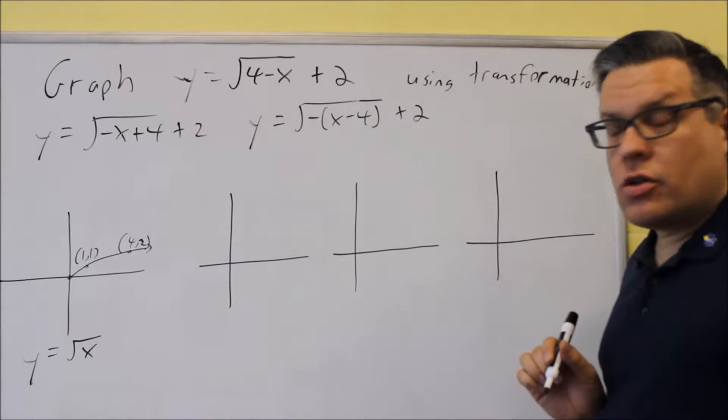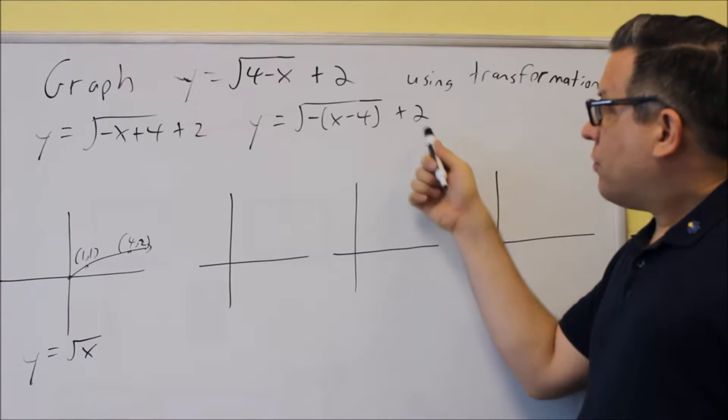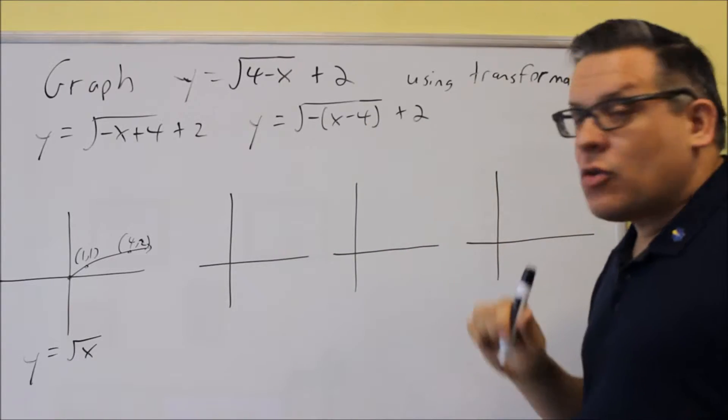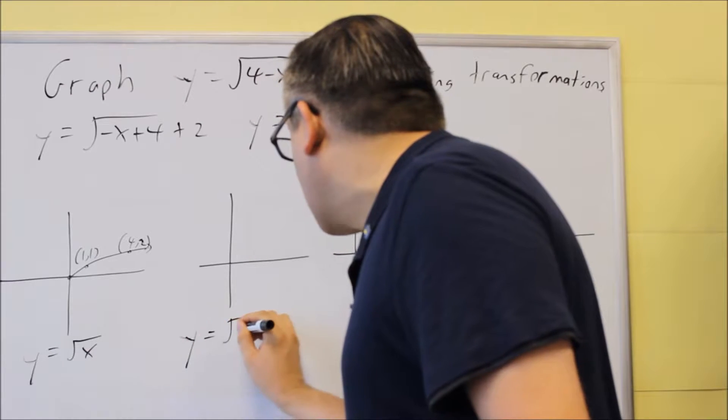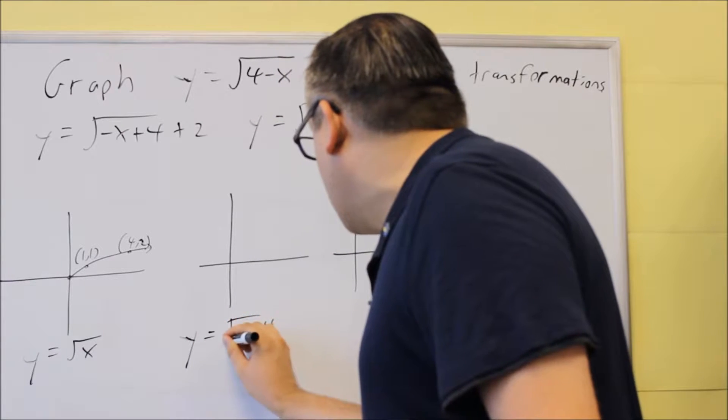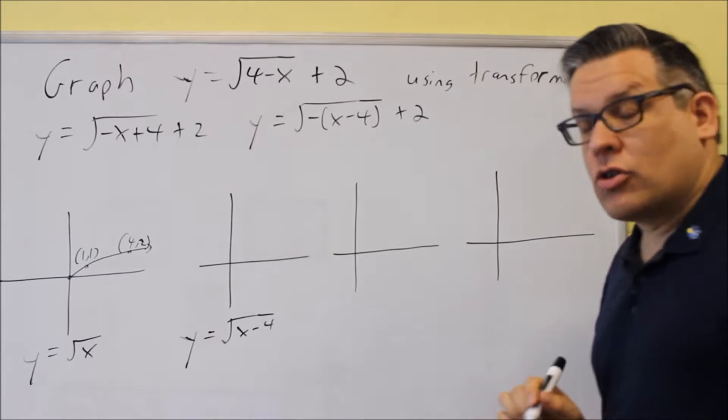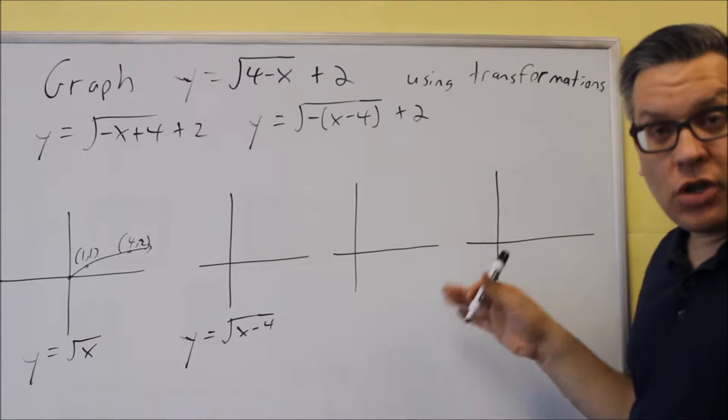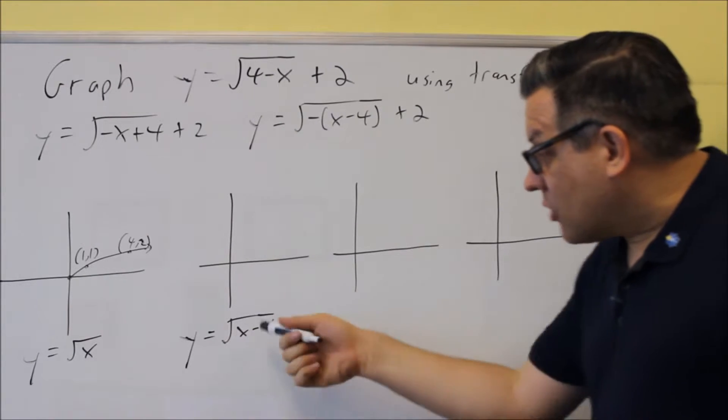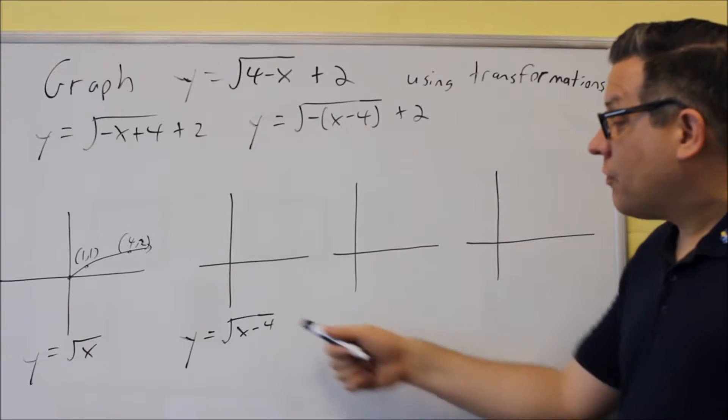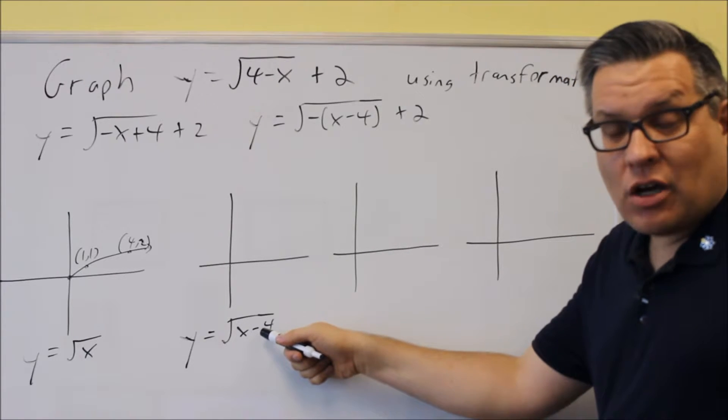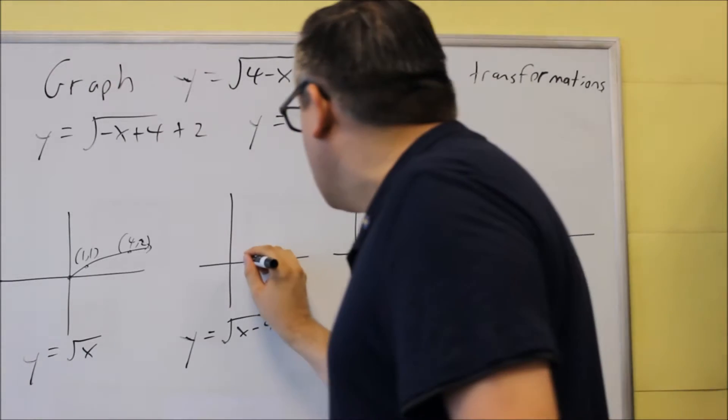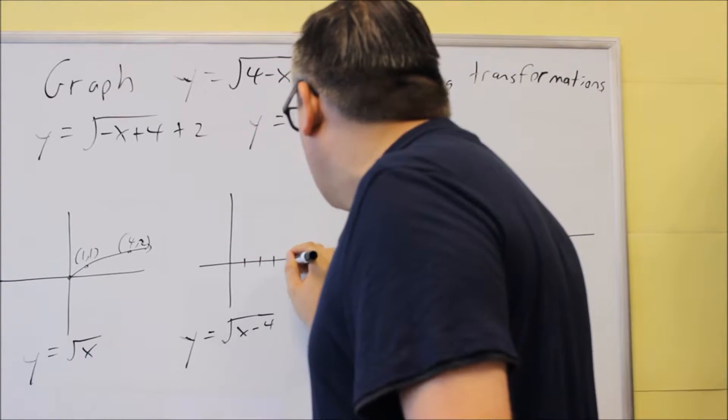And we have our special key points that I'll put here. We have our 1, 1 and 4, 2. So, this is our base graph. The graph goes up and to the right. That's our general sketch. Now, here's the other ones that we're going to do. It doesn't matter if you do the plus 2 first or if you do the inside one first. I'm going to do the inside one first. But, without the negatives, I'm just going to do this one. Square root of x minus 4.